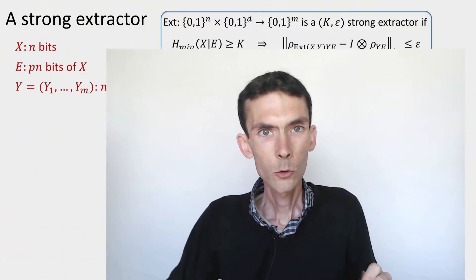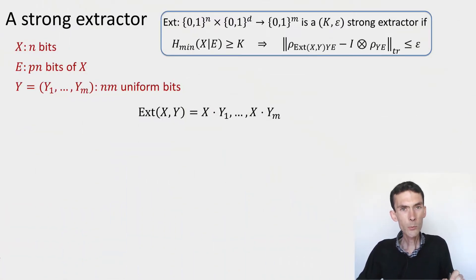Let's construct our first strong seeded extractor under some restriction on the form of the side information. We're going to consider the same scenario from the previous example. We take a source x, which is an n-bit string, and we assume that the side information e consists of p times n of the bits of x. We don't know which bits, but we know that it's p times n fixed bits.